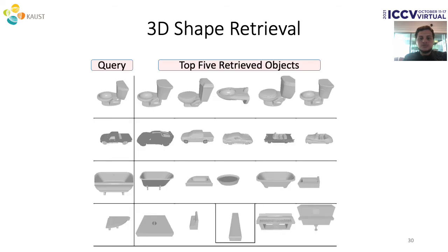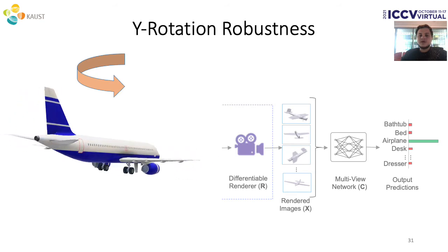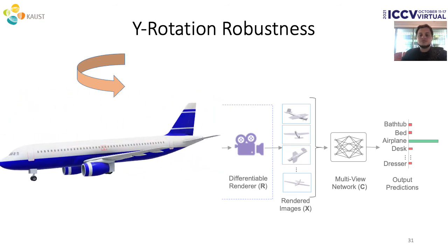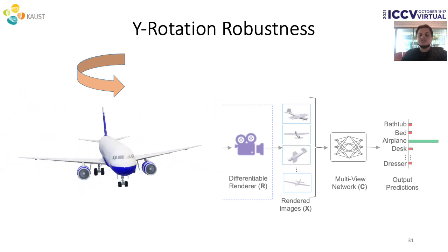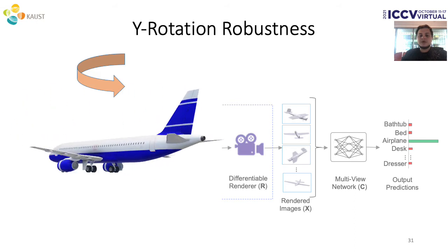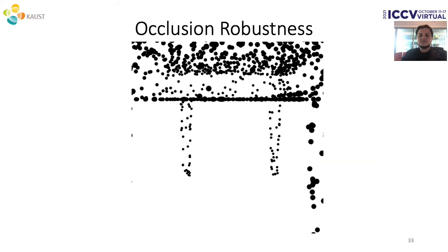Here we show some qualitative examples of shape retrieval. We also evaluate the robustness of our MVTN approach to rotation by randomly rotating the object at test time around the gravity axis. MVTN performs better than strong baselines specialized to this task of rotation robustness.